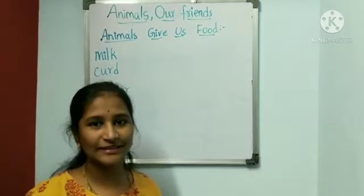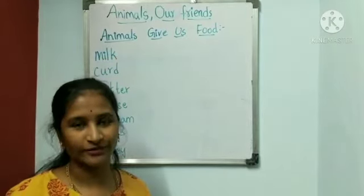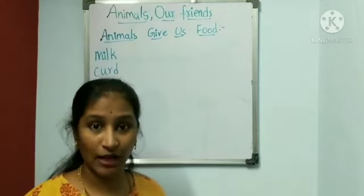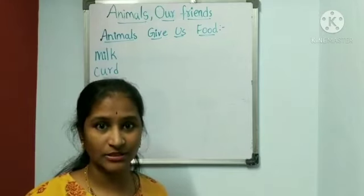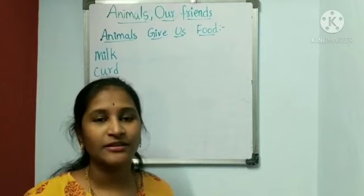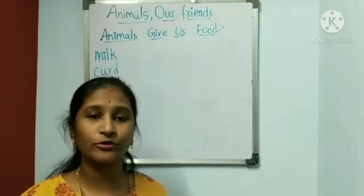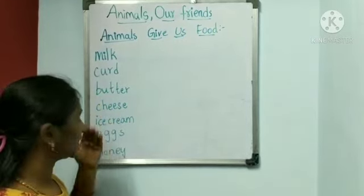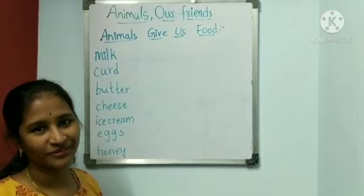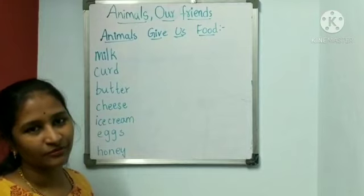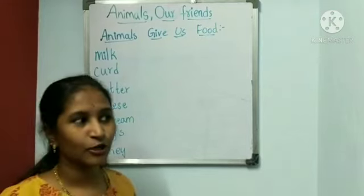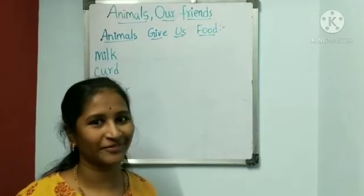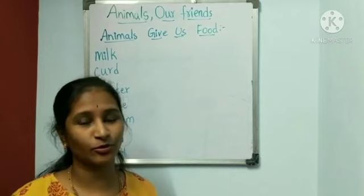Now let us learn — animals give us food. Some animals will give us milk: cows, buffaloes, and goats give us milk. With that milk, we can prepare curd, butter, cheese, and ice cream. Do you like ice cream? If yes, show thumbs up — I can see many thumbs up over there!